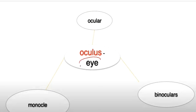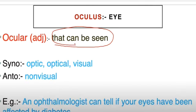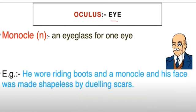Oculus means eye. Ocular can be seen as synonymous with optic, optical, and visual. An ophthalmologist can tell you if your eyes have been affected by diabetes. A monocle is an eyeglass for one eye.